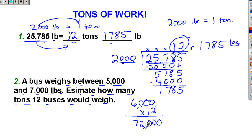But the question says, how many tons do 12 buses weigh? That means I have to convert these pounds into tons. And I'm dividing by the number 2,000. How many 2,000s are there in 7? None. In 72? None. In 720? None.